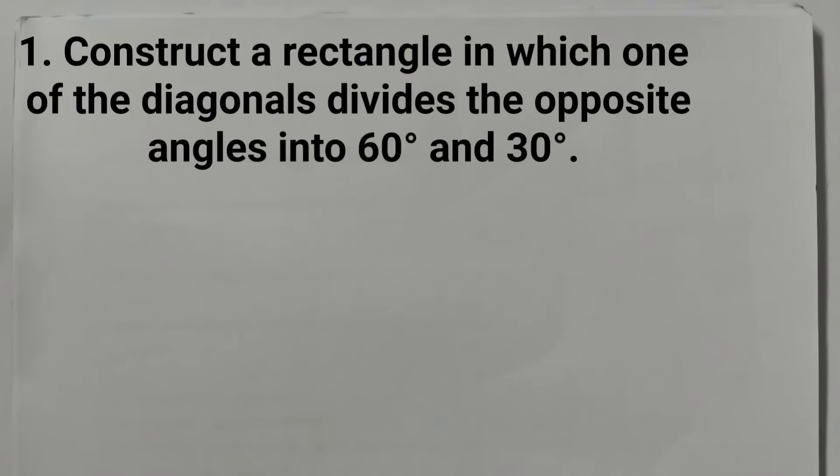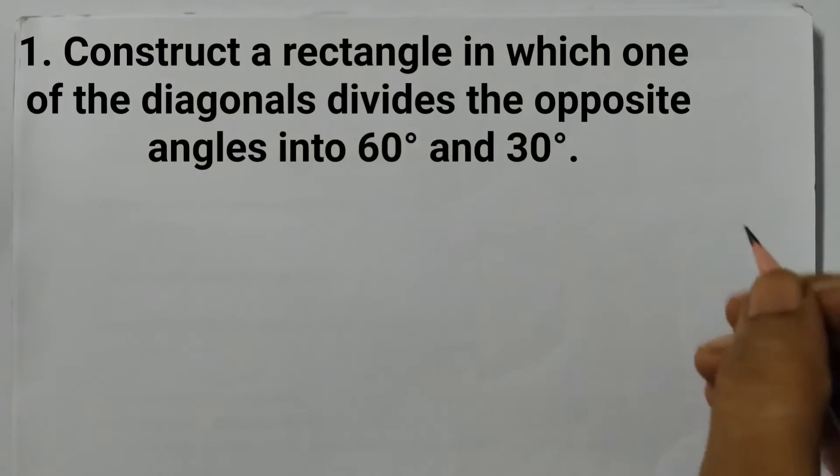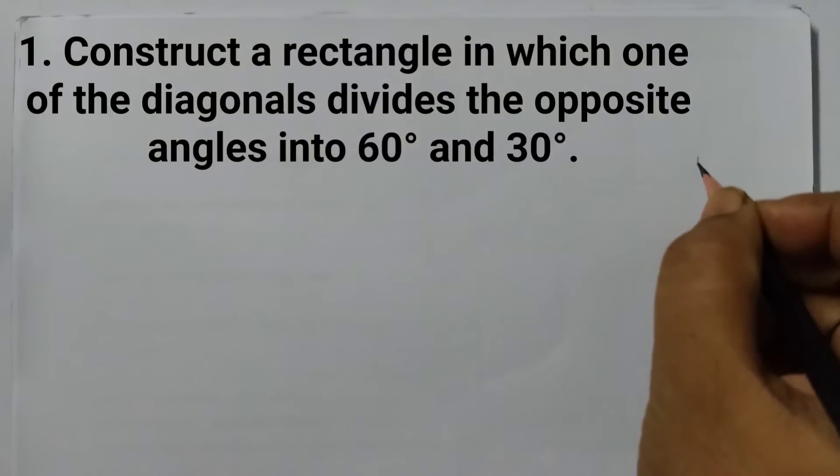The question is: construct a rectangle in which one of the diagonals divides the opposite angles into 60 degrees and 30 degrees. Let us start with a rough diagram. Always draw a rough sketch.